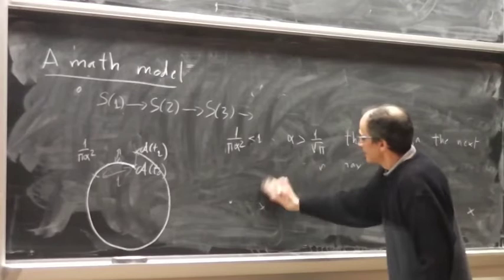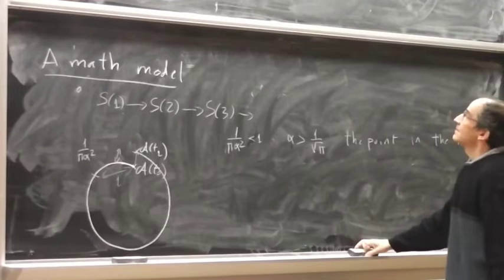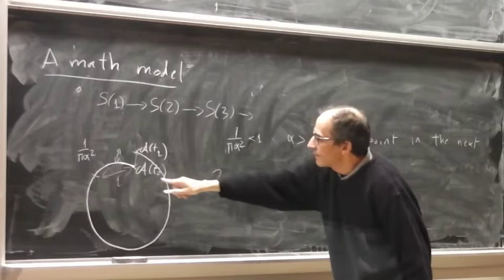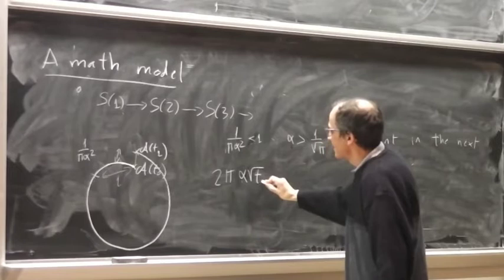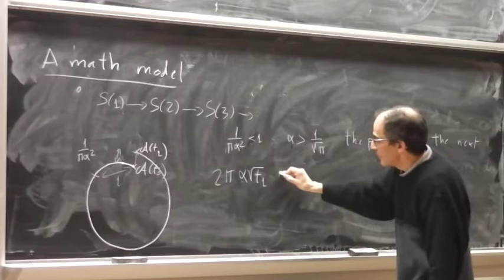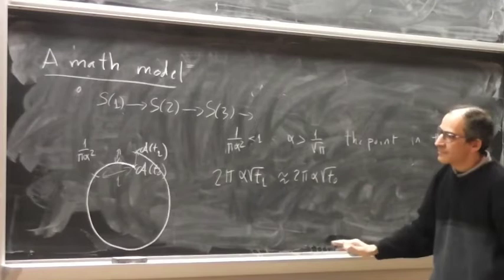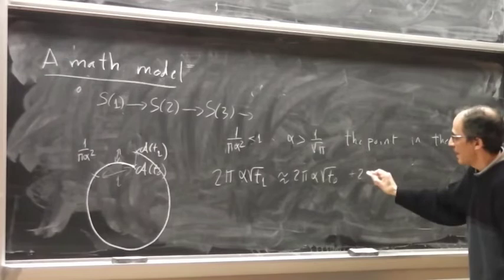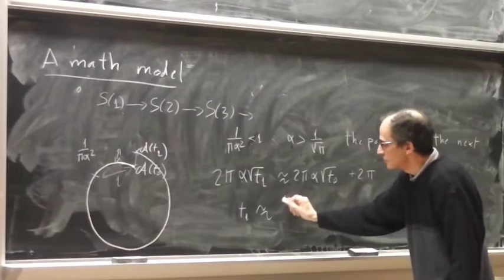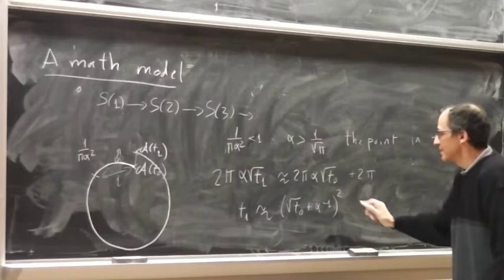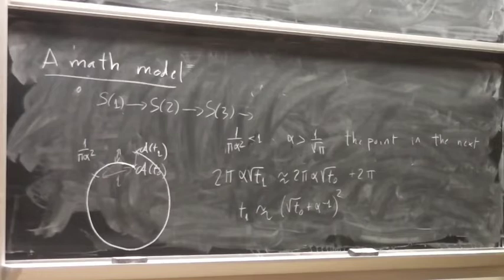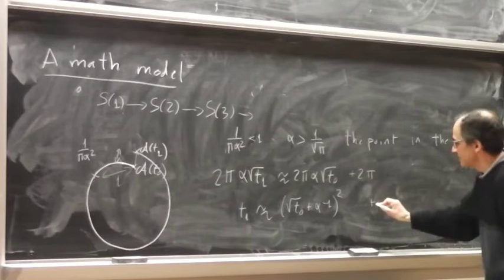The model is as follows. The angle of a point on the spiral is given by a certain formula. We want the next term T1 to be at the same angle as T0 plus 2pi. This means that T1 is close to the square root of T0 plus alpha minus one, squared. But these are integers — T0 and T1 are non-negative integers.